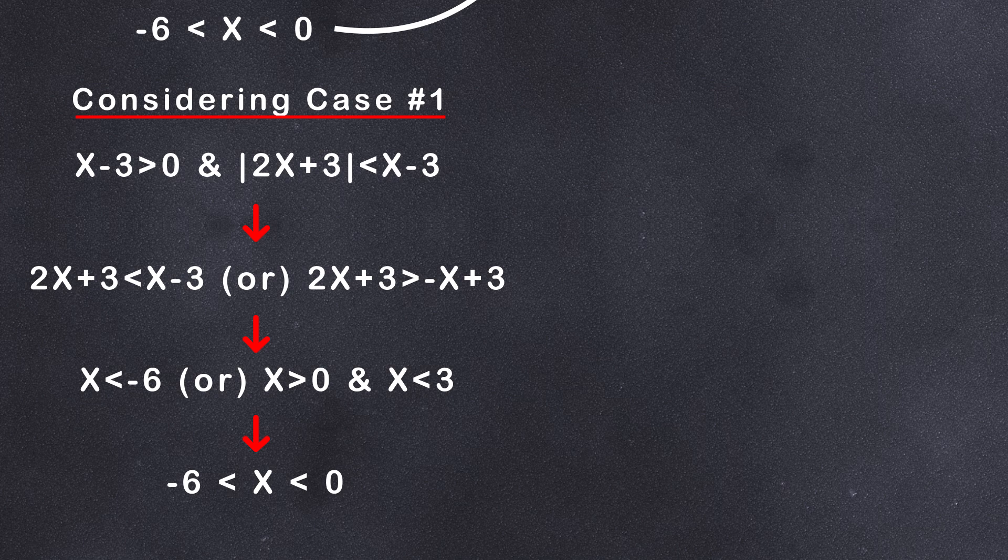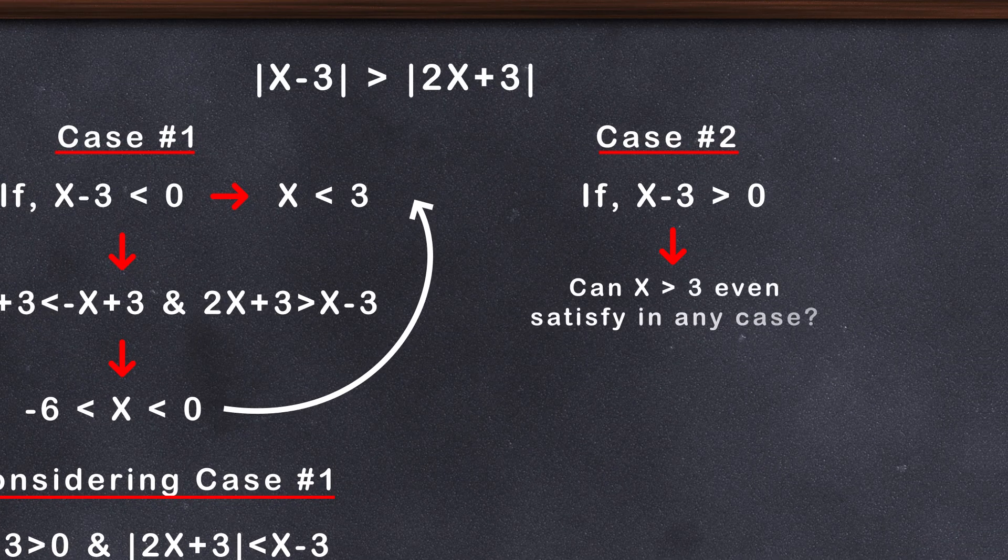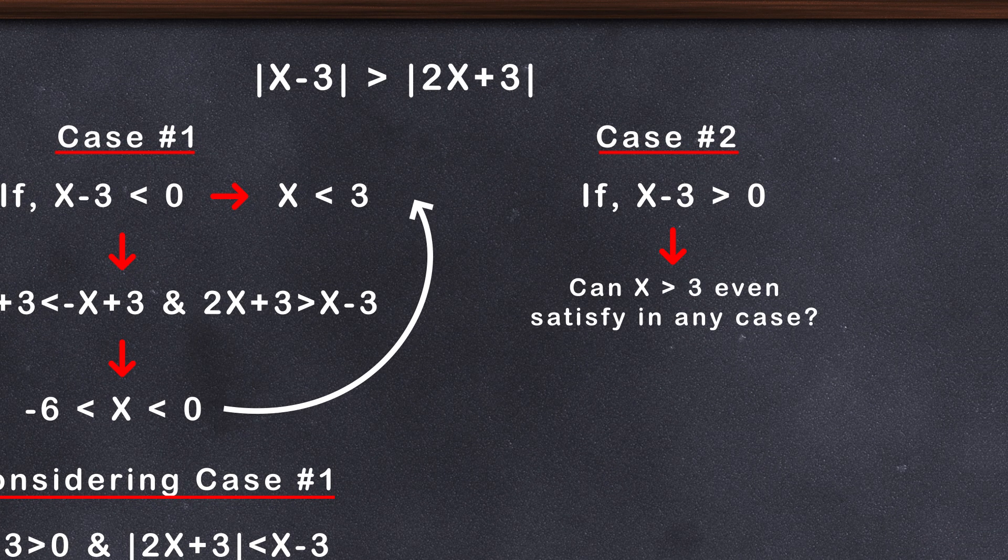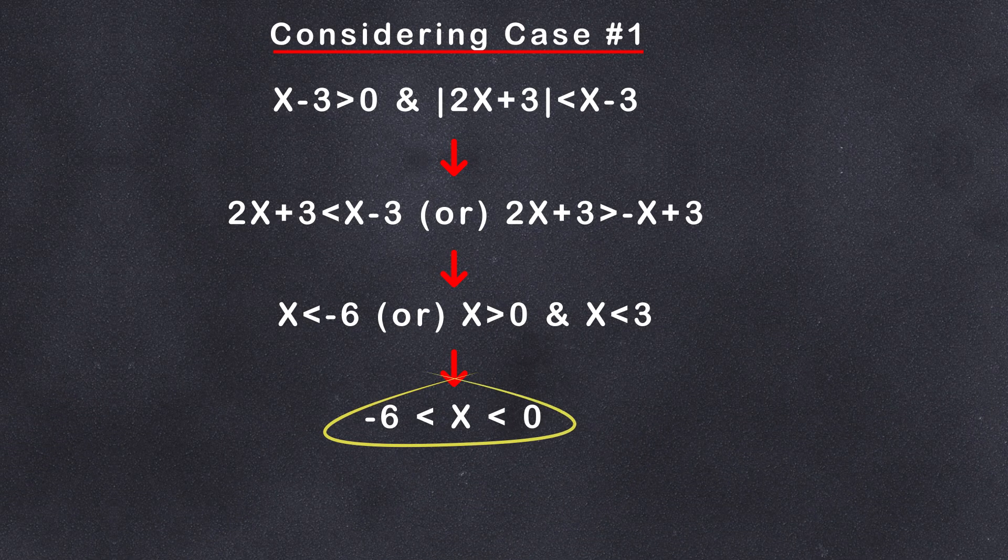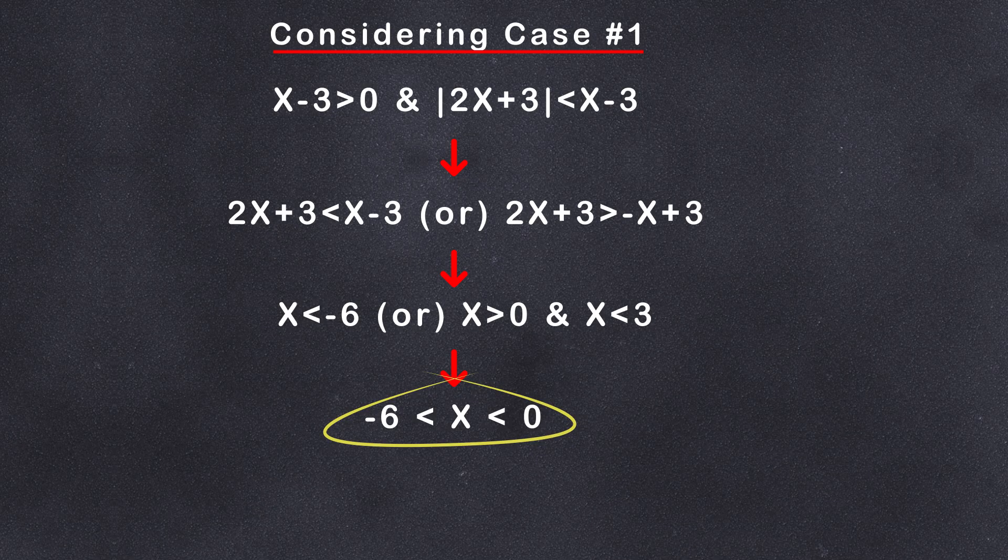Before solving case number two, let's look at the initial equation. Can x > 3 even satisfy in any case? Well, no. Therefore, we are not going to bother even solving this case. Hence, our final answer is -6 < x < 0. When you make assumptions for variables, be sure to check after each step whether the answer you have satisfies the assumptions you are making.